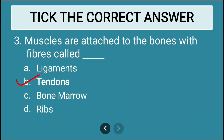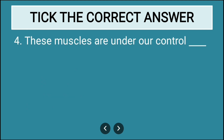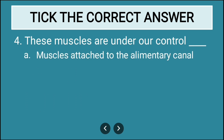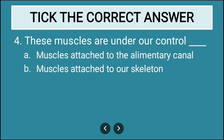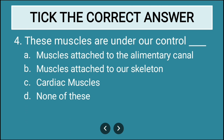Fourth question: These muscles are under our control. Options are muscles attached to the alimentary canal, muscles attached to our skeleton, cardiac muscles, or none of these. The correct answer is muscles attached to our skeletal system — option B — because they are under our control.